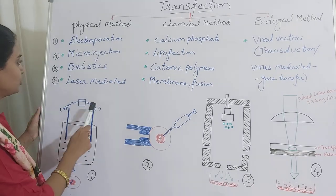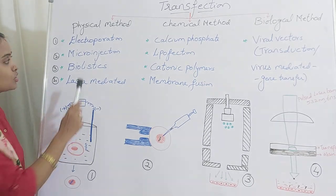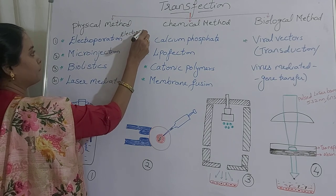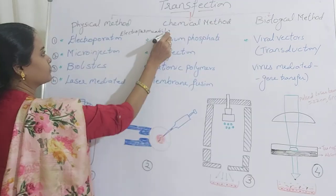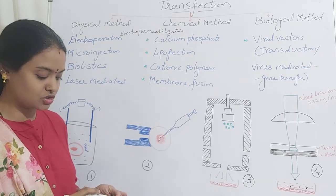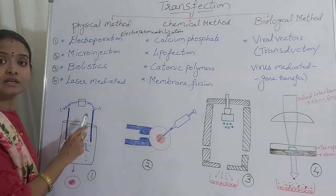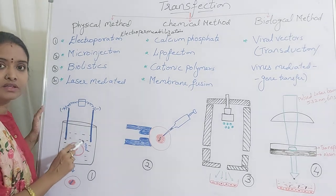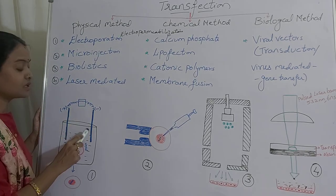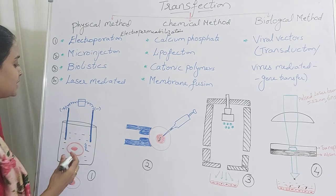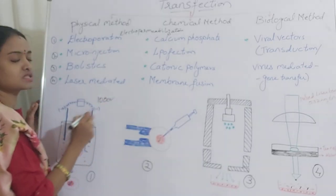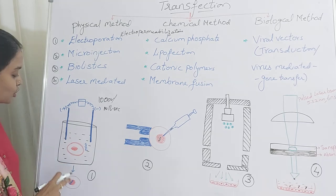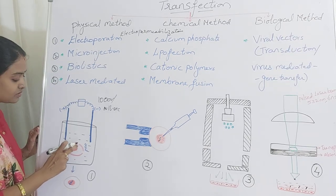The first technique is electroporation, also referred to as electropermeabilization. In this technique, you create an electric pulse — a shock to the cells — of 1000 volts for only a few milliseconds. When you give this shock for milliseconds, the pores present in the plasma membrane of the target cell will open up.